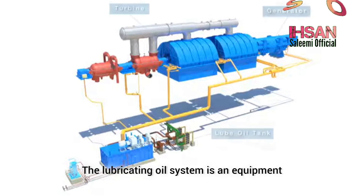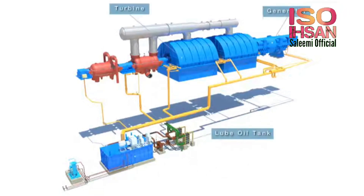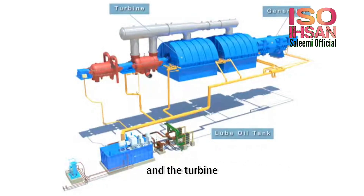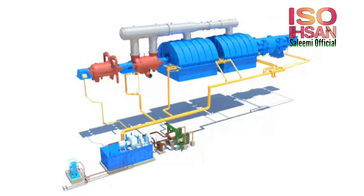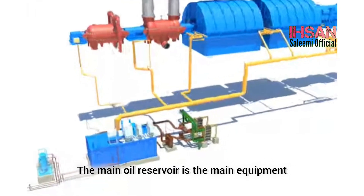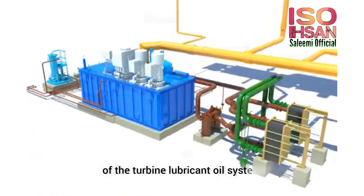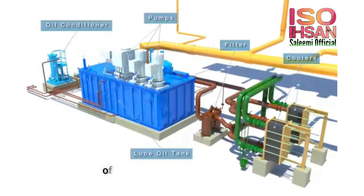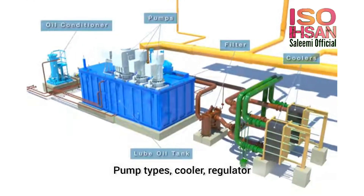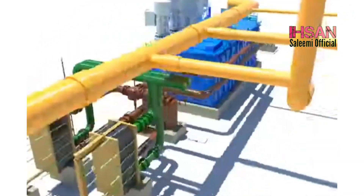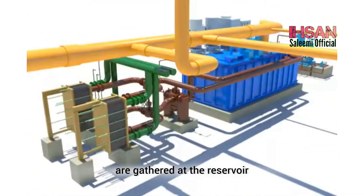The lubricating oil system is an equipment which provides lubricating oil to the bearings of the generator and the turbine. The main oil reservoir is the main equipment of the turbine lubricant oil system. Pump types, cooler, regulator, and integrated lubricating oil systems equipment are gathered at the reservoir.